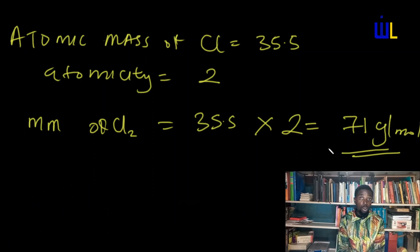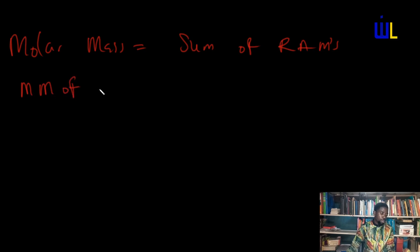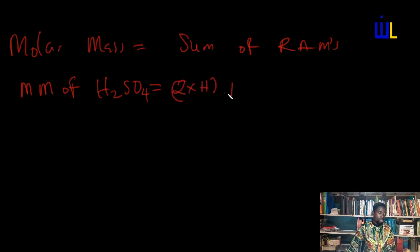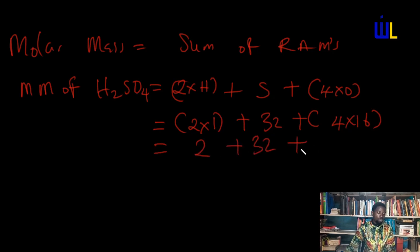The molar mass of compounds is expressed as molar mass equals the sum of relative atomic masses. For example, the molar mass of H₂SO₄ (sulfuric acid): I add the atomic masses — 2 hydrogen atoms plus 1 sulfur plus 4 oxygen atoms. Substituting: 2×1 (hydrogen = 1) plus 32 (sulfur) plus 4×16 (oxygen = 16). That gives 2 + 32 + 64 = 98 grams per mole.